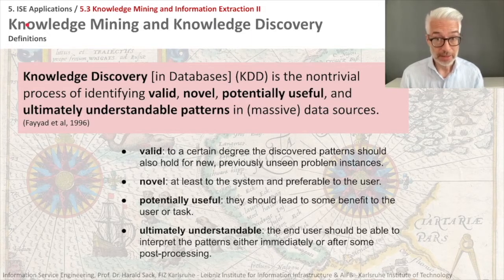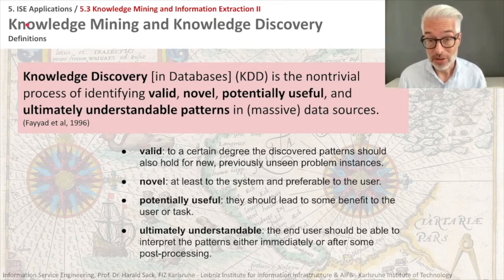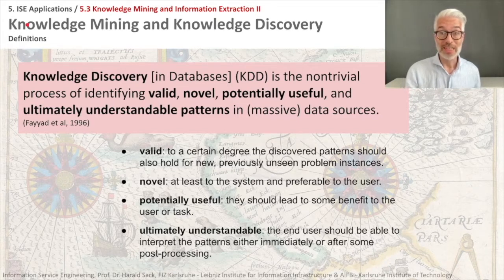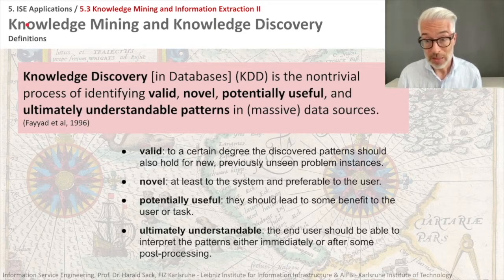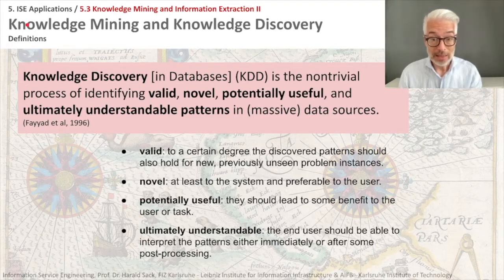Knowledge discovery, KDD, is the non-trivial process of identifying valid, novel, potentially useful and ultimately understandable patterns in massive data sources. Valid patterns means the discovered patterns should also hold for new, previously unseen problem instances. They have to be novel, at least to the system and preferably to the user. They have to be potentially useful, meaning they should lead to some benefit to the user or the task at hand. And they should be ultimately understandable, so the end user should be able to interpret the patterns either immediately or after some post-processing. This is knowledge discovery.